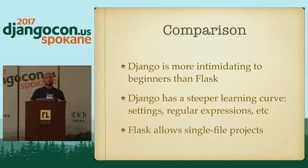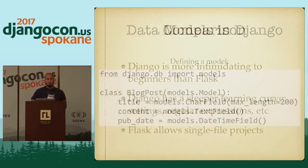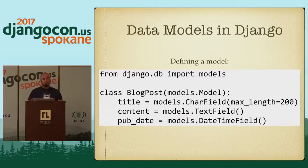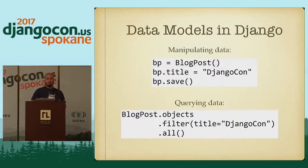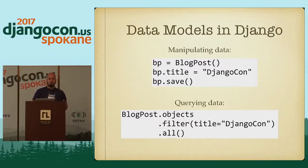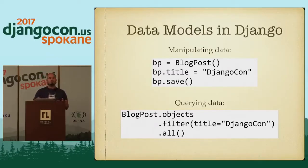But projects are generally more complicated than Hello World. Typically you want to store some data in a database, modify it, and render that data on the front end. So how do you do data modeling? In Django, we use the Django ORM — from django.db import models — and here I'm defining a basic blog post model. To manipulate the data, you create an instance, assign information to properties, and call object.save. You can query the database using BlogPost.objects with filters and selects.